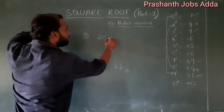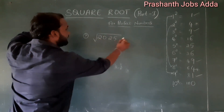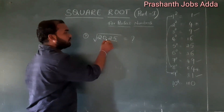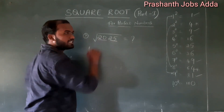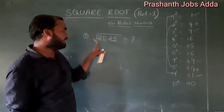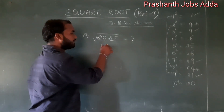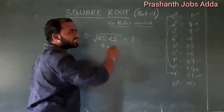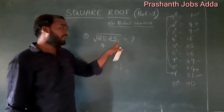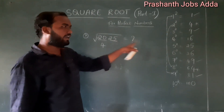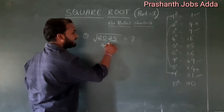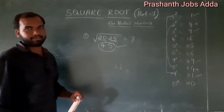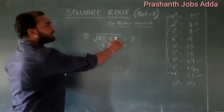Question 3: square root of 2025. We split into two-digit pairs giving 20 and 25. Four squared is 16, five squared is 25. Last digit is 5, and when the last digit is 5 there is only one possibility — 5. So we can directly say the answer is 45.